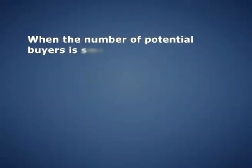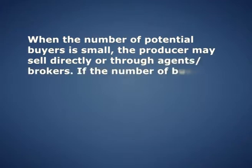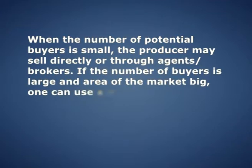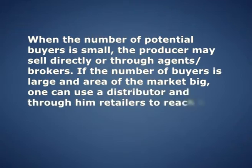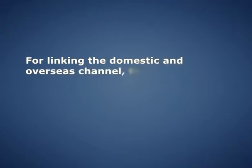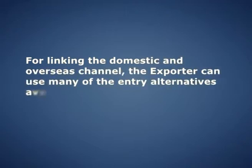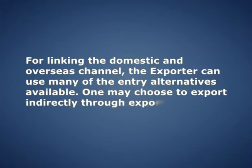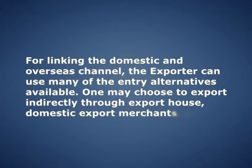For industrial goods, the common channels are as follows. When the number of potential buyers is small, the producer may sell directly or through agents or brokers. If the number of buyers is large and the market area is big, one can use a distributor and through him retailers to reach the consumer. For linking the domestic and overseas channel, the exporter can use many entry alternatives available — exporting indirectly through export houses, domestic export merchants, etc., or exporting directly using the various channels of distribution in the foreign land. The first task of the exporter is to find out the possible distribution channels through which he can reach the consumer.